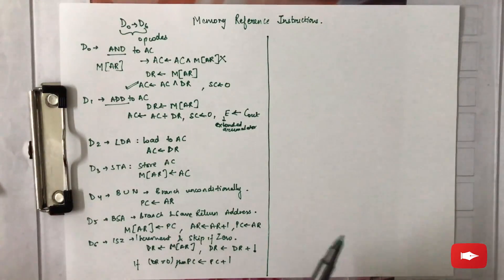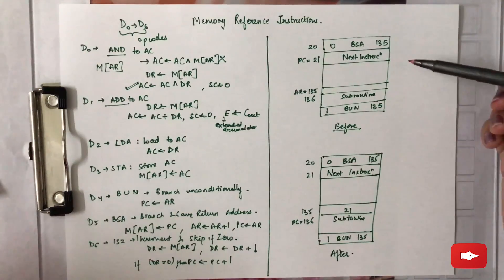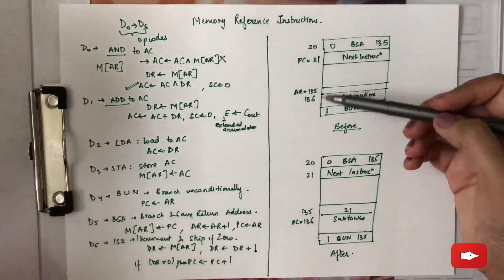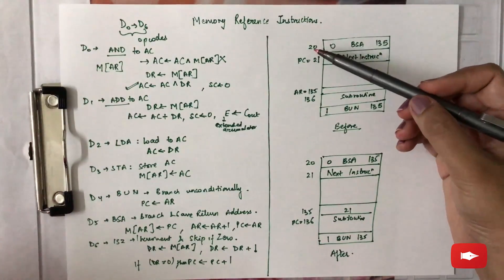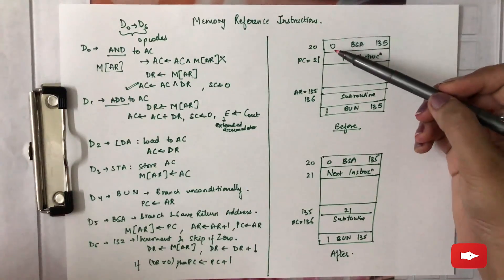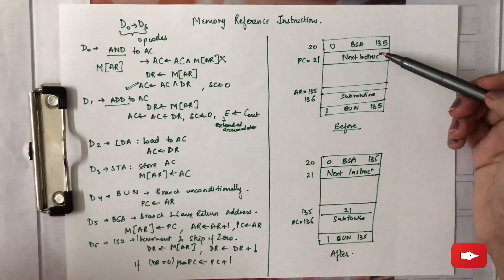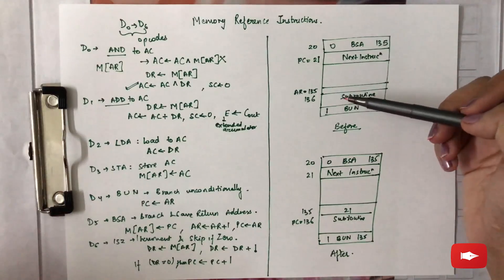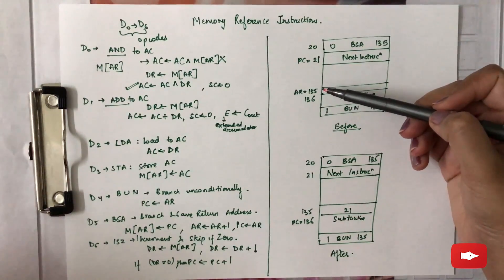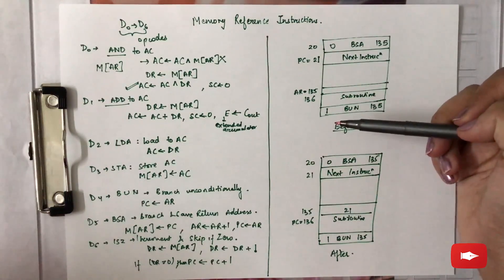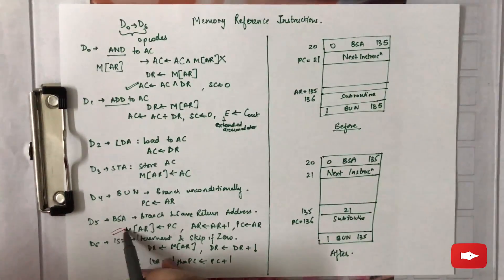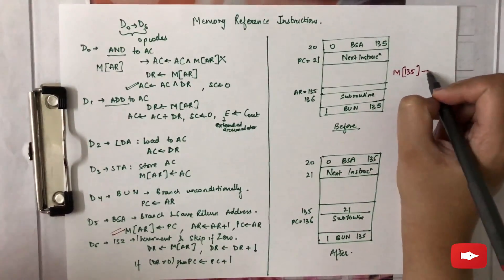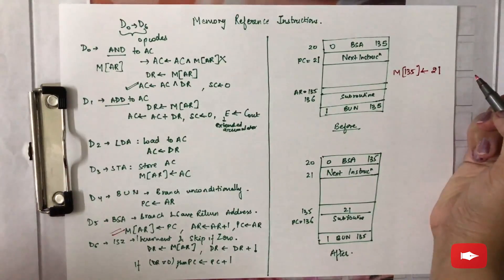Let's illustrate BSA with an example showing before and after instruction execution. The memory contents show that at address 20 there is a BSA instruction, where 0 is for direct addressing and 135 is the effective address. PC equals 21, meaning it holds the address of the next instruction. AR holds the value 135, so when the BSA instruction is performed, the value of PC is transferred to that address.